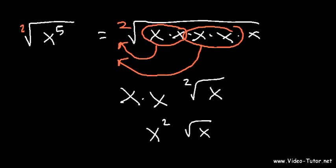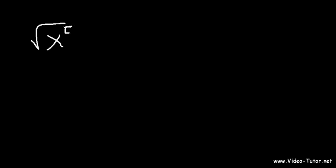Another way you can simplify this and get the same answer is to ask: how many times does 2 go into 5? 2 goes into 5 two times, because 2 times 2 is 4, and 2 times 3 is 6 — that's too much. What's remaining? 5 minus 4 is 1, so you get 1 remaining. That's another way you can simplify it.